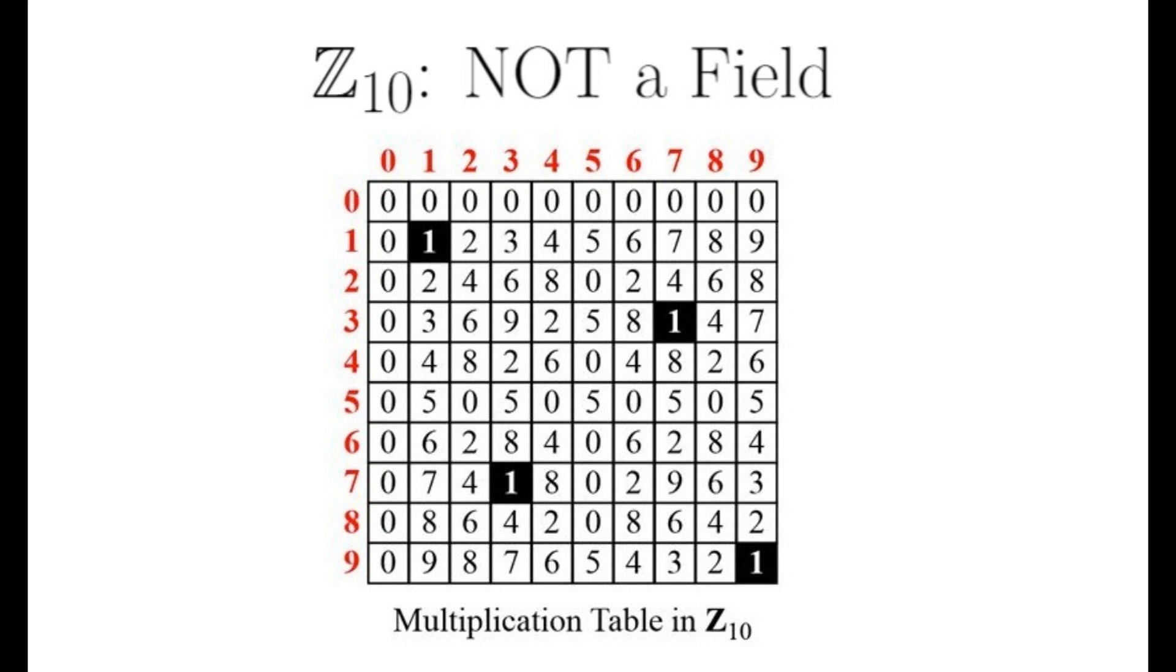Recall from a previous example Z7 is a field and 7 is a prime number. Now there are some finite fields whose order is not prime, it's actually a power of a prime, but I'm not talking about those right now, I'm talking about Zn. And Zn is a field under addition and multiplication modulo n if and only if n is a prime number.